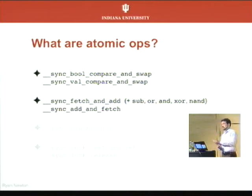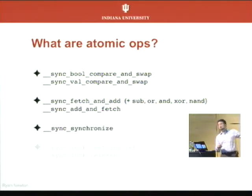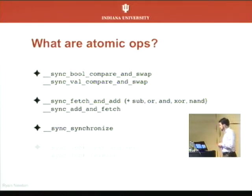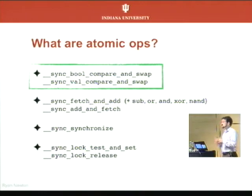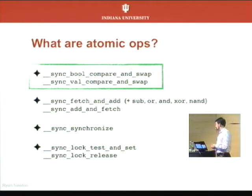There's fetch-and-add: fetch a value and do something to it. There are full memory barriers, which basically say reads and writes cannot migrate beyond this point. There's test-and-set, block-release, and others. But the kinds of data structures I'm talking about today — mainly concurrent queues and deques — are going to be based on compare-and-swap.